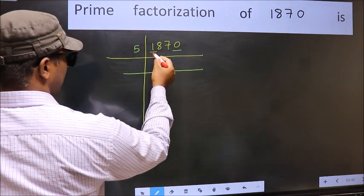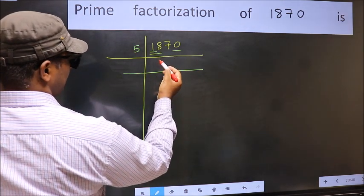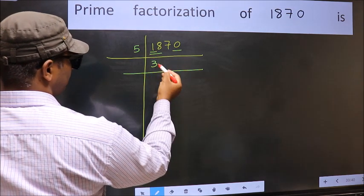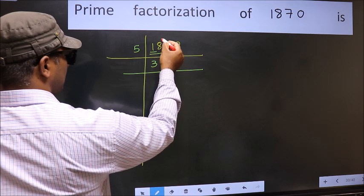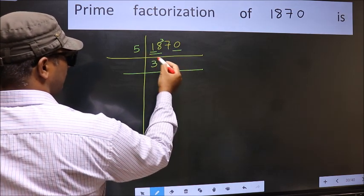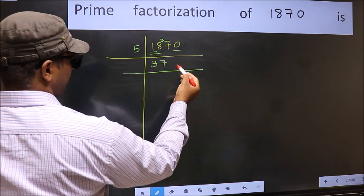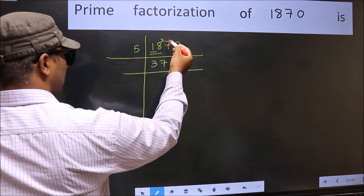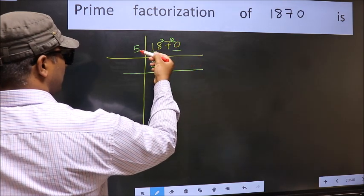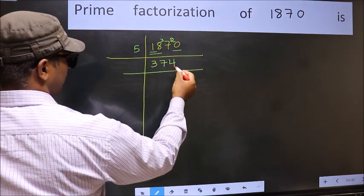Smaller than 5, so take two numbers: 18. A number close to 18 in 5 table is 5×3 = 15. 18 minus 15 = 3, 3 carried forward, 37. A number close to 37 in 5 table is 5×7 = 35. 37 minus 35 = 2, 2 carried forward, 20. When do we get 20 in 5 table? 5×4 = 20.